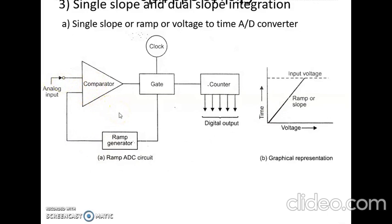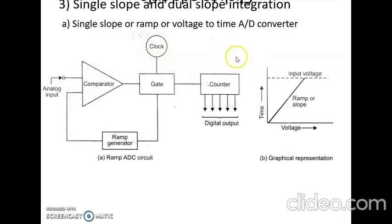The time consumed by the ramp voltage to increase to a value equal to the sensor voltage depends on the size of the sampled analog voltage. When the ramp voltage starts, a gate opens and a binary counter begins counting regular pulses from the clock. When the ramp voltage equals the analog input voltage, the gate closes and the count indicated by the counter is the digital representation of the sampled analog voltage.